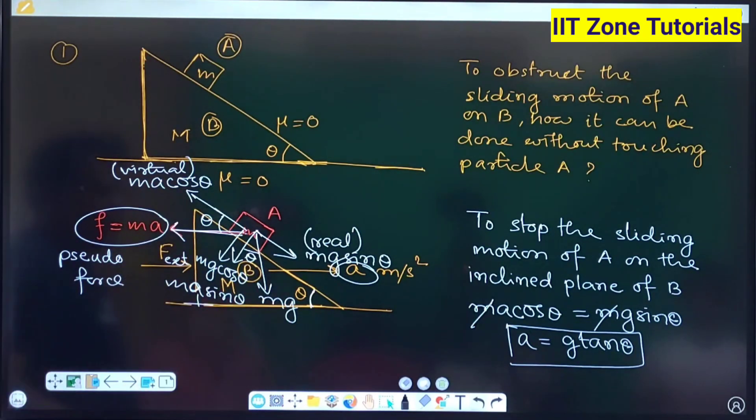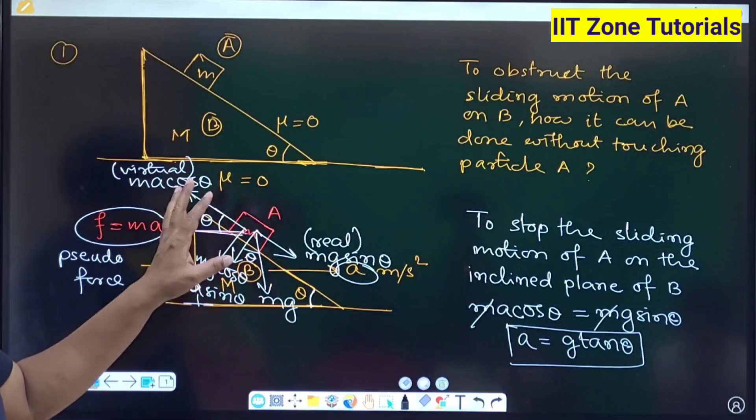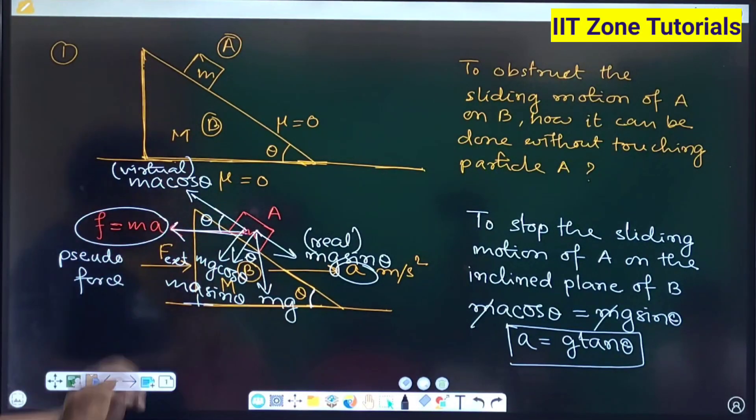This is one specific case where the external agent is applying force and that is giving a resulting acceleration on capital M which is g tan theta, then this situation, this result will be achieved. Are you getting me or not?